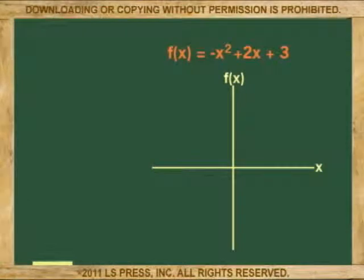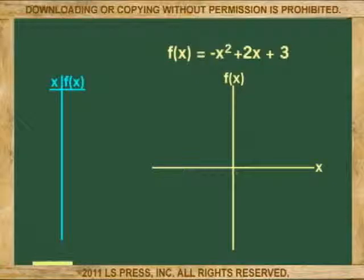Another parabola forms when we plot the function f(x) equals negative x squared plus 2x plus 3. First we build the table.